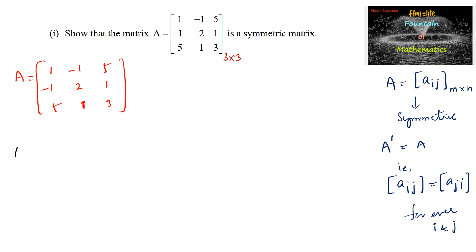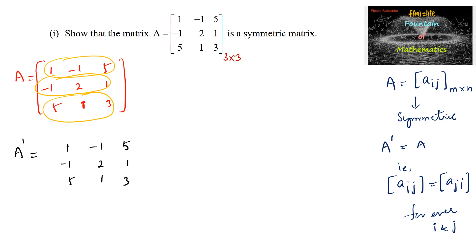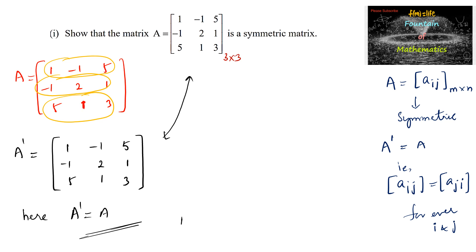Then A transpose is equal to — the first row becomes the first column: 1, negative 1, and 5. The second row becomes the second column: negative 1, 2, and 1. And the third row becomes the third column: 5, 1, 3. We can observe that A transpose and the given matrix are both the same. Therefore, A is a symmetric matrix.